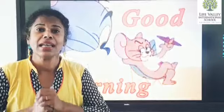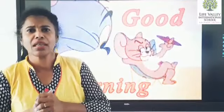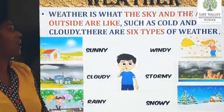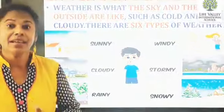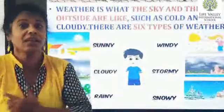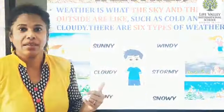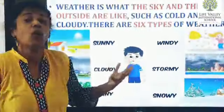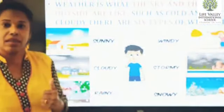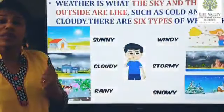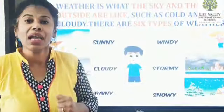Today is a sunny day. So let's see what is the meaning of weather. When do you say it is sunny, cloudy, or rainy? How do you come to know about it? Weather is what the sky and the air outside are like. It could be a cold weather, a cloudy day, a windy day, a stormy day, a snowy day, or a rainy day. So let's look at it one by one.